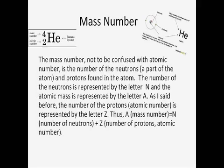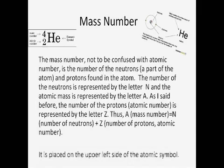A, the mass number, equals N, the number of neutrons, plus Z, the number of protons, atomic number. It is placed on the upper left side of the atomic symbol.